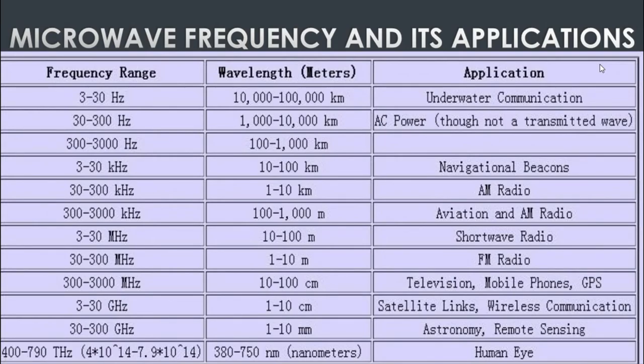As we can see, we have the microwave transmission frequency and its applications. For example, underwater communication has a wavelength between 10,000 up to 100,000 km and frequency range between 3 to 30 Hz. There is also the AM radio, which has a wavelength between 1 to 10 km and frequency range between 30 up to 300 kHz.